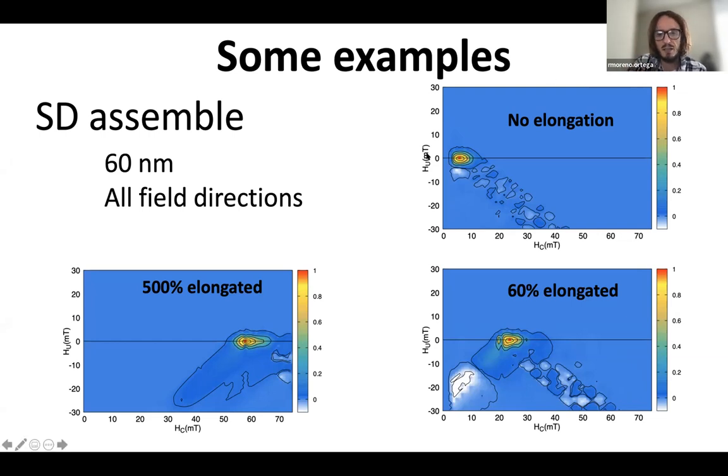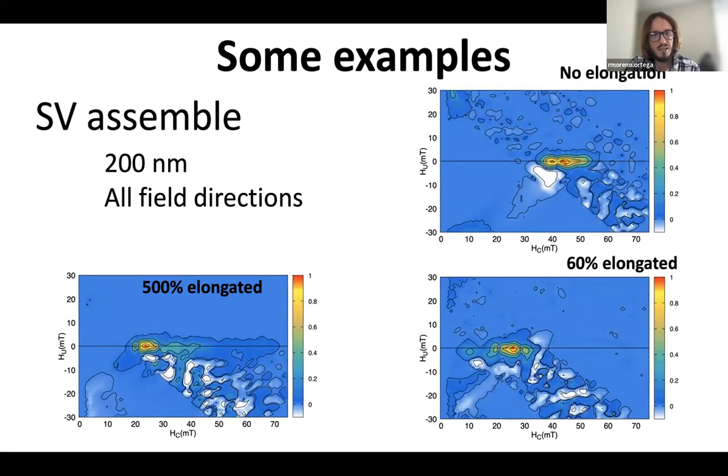I'm going to show you some examples. These are single domains with and without elongation. You can see that clearly we have a maximum for the non-elongated particles that increases in the coercive axis as we increase the elongation. Also we can see a very nice feature here: when we increase elongation we see a minimum going to the left of the maximum. We cannot see it in the 500% elongation because it's below, outside the plot.